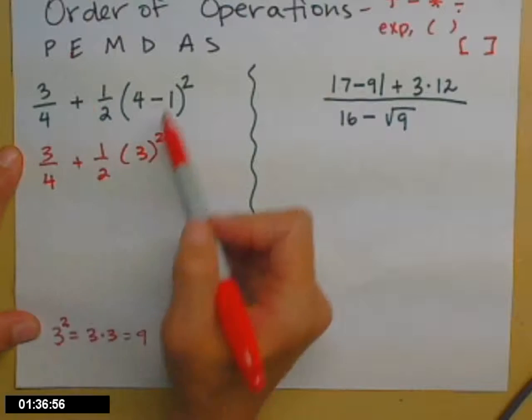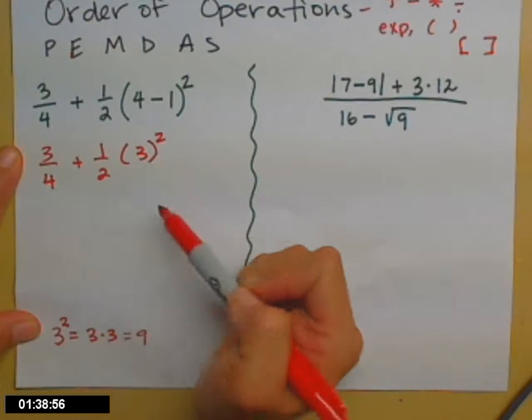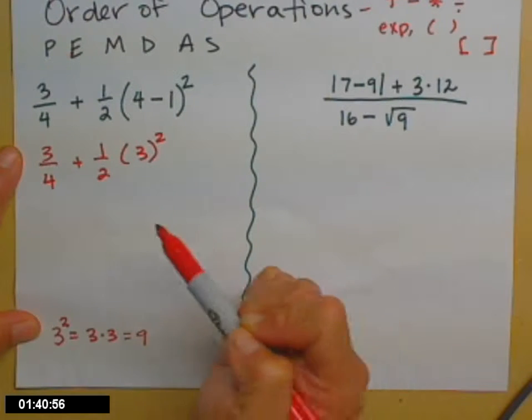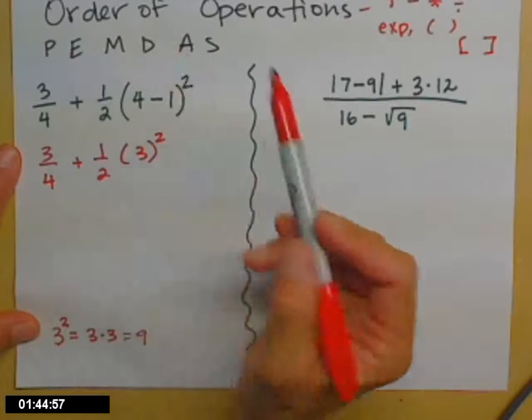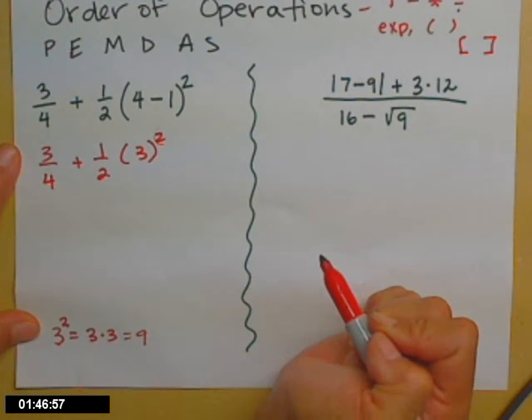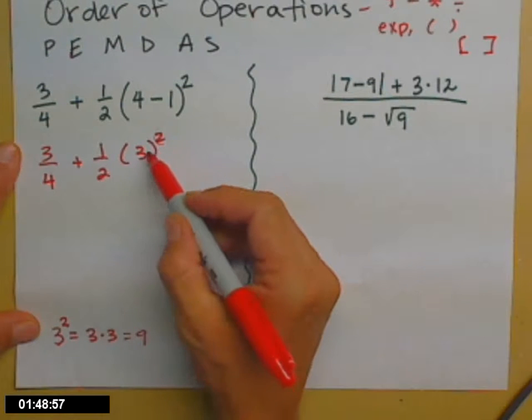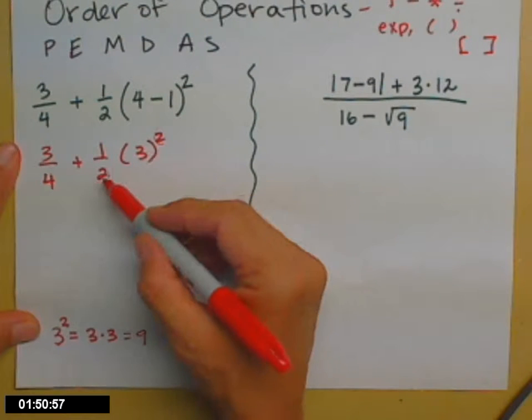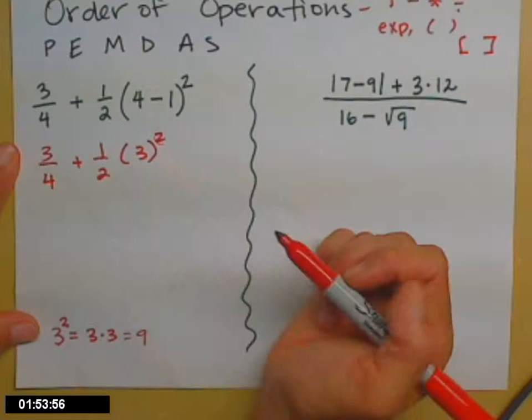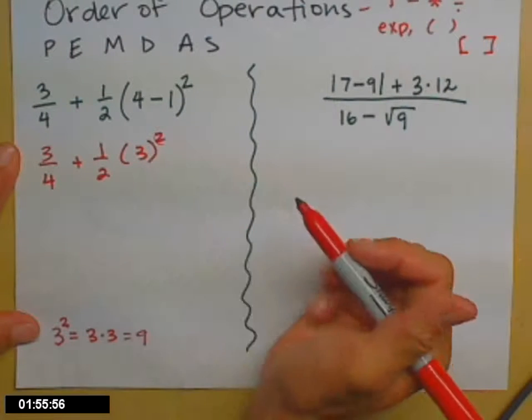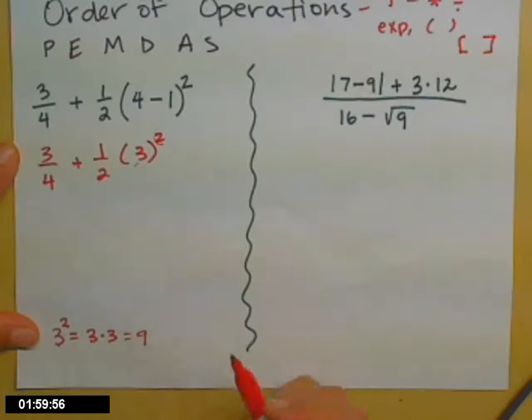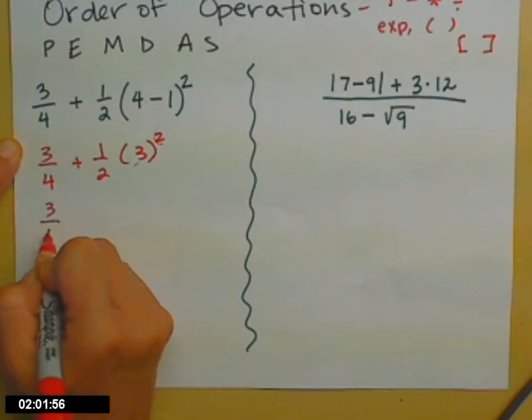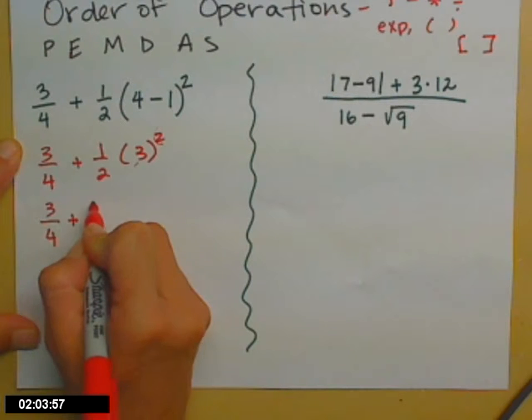All right, so now I've done the P. I don't have any parentheses. Well, these parentheses holding the 3 in are just telling us something else is going to happen to the 3. Then I do my exponents, and I have one of those. I have that 2 we were just talking about. The 2 is only applied to the 3. It's not applied to the 1/2, and I know it because that 3 is in parentheses, and that's where the 2 is attached, the little 2 up here. So I'm going to replace that 3² with a 9 because I do exponents after I do all of my parentheses.